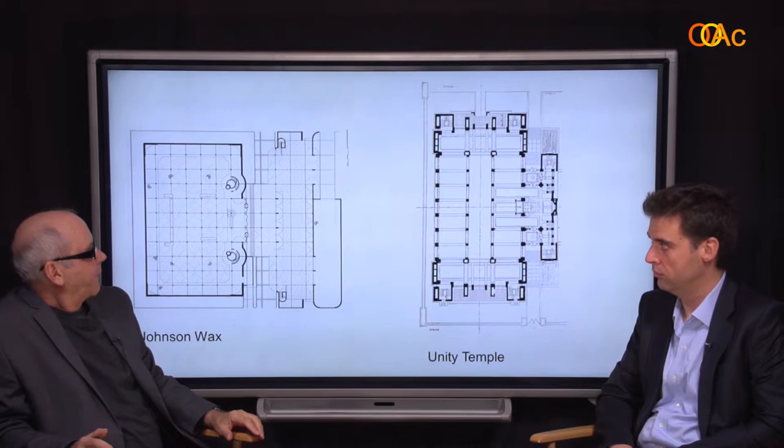Here we can see the balcony running around, and a band of window above — because Wright wants to tell you this wall is not holding up the roof. That's a key point. Architects want to be clear: we're not using bearing walls, we're using columns. Le Corbusier makes that point too. And then we have columns here and skylights above.